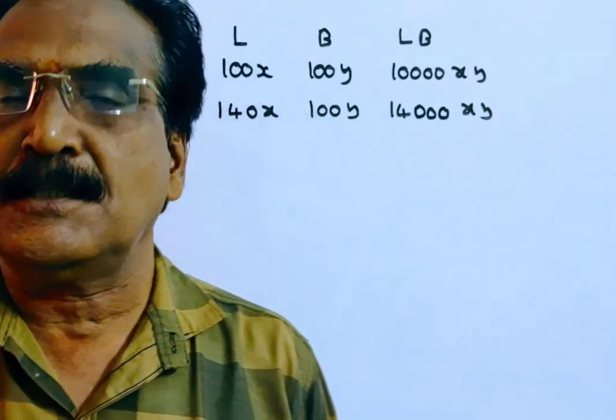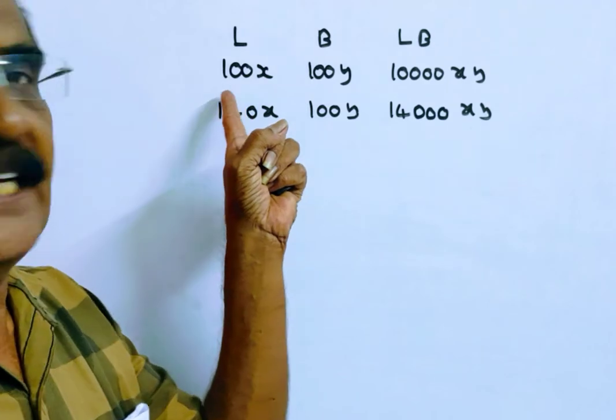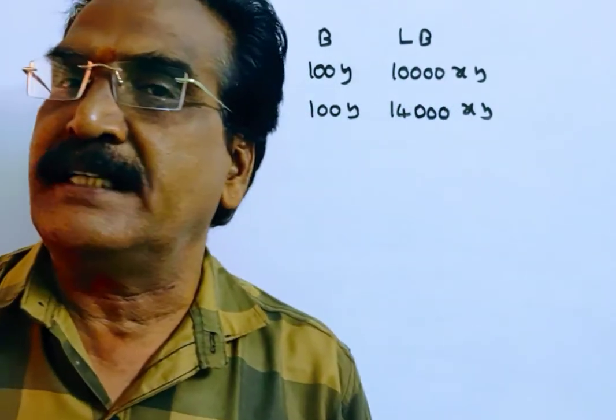The problem is given in the description box. Please go through the problem first. Say the length of the rectangle is 100x and breadth 100y, then the area becomes 10,000xy.